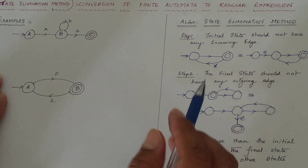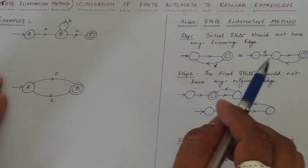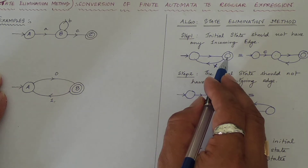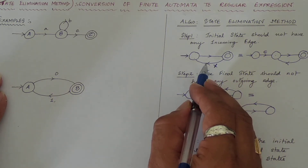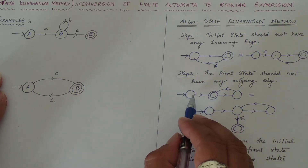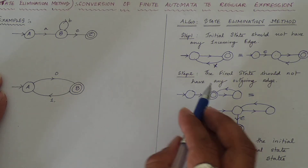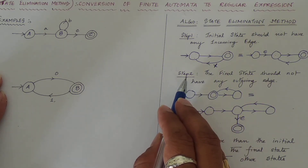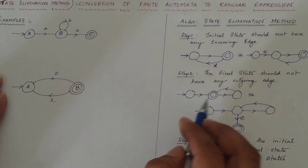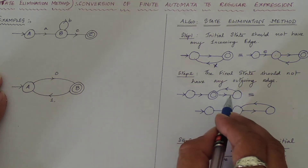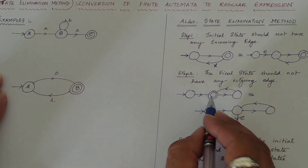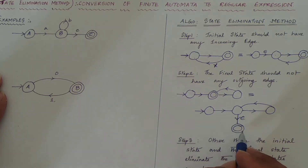Moving to step number two: step number two is about the final state. The final state should not have any outgoing edges — this is an important condition. Here the final state is having an outgoing edge, so what do you do? You have to make this final state a normal state and from that normal state take an epsilon transition to a new final state.